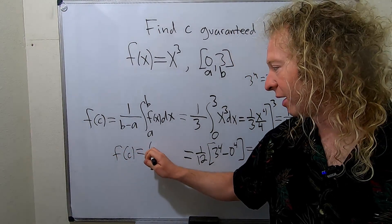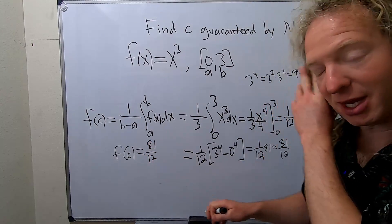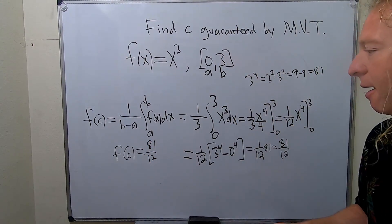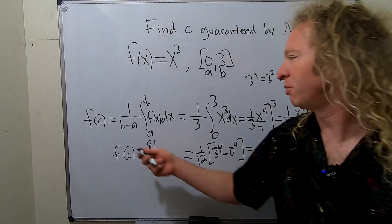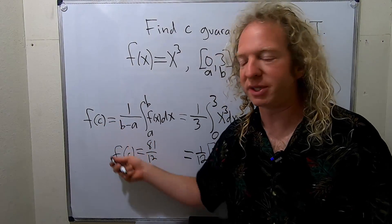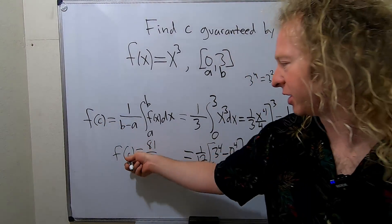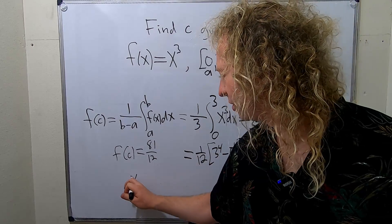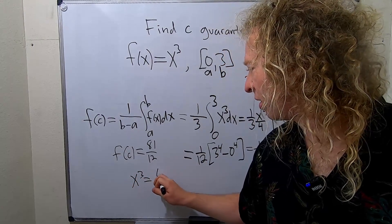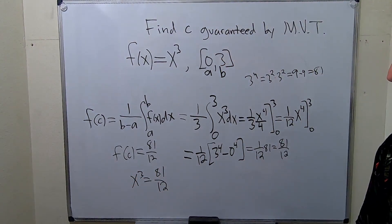You can use x, by the way. Most of the time when I do this, I just put f of x here. That's fine. It doesn't matter. I just wanted to be really perfect this time. And plus, it's already on the board. So I just called it c anyways. But you can put an x here. So this is x cubed equals 81 over 12.